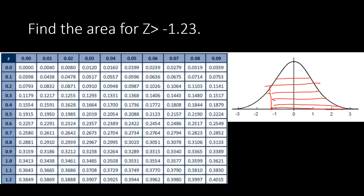You can also determine the shading direction by simply looking at your symbol — which side is the tail pointing to. This tail here is pointing towards the right side, so your shading will follow that direction, towards the right side. This shaded region is the area we need.